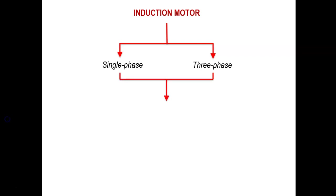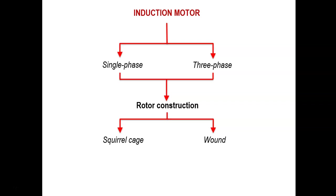Both single-phase and three-phase induction motors can be further classified in terms of rotor construction as either a squirrel cage or a wound rotor. In the squirrel cage induction motor, the rotor is made of bars of conductors. For the wound rotor, the windings on the rotor are exactly the same as the windings on the stator. In this course we will concentrate on the three-phase type, covering both squirrel cage and wound rotor, with emphasis on the squirrel cage type.